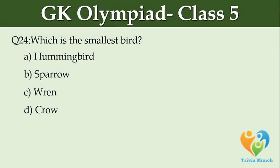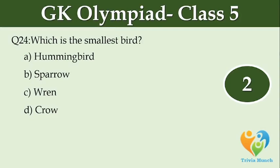Which is the smallest bird? Option A: Hummingbird. Option B: Sparrow. Option C: Wren. Option D: Crow.